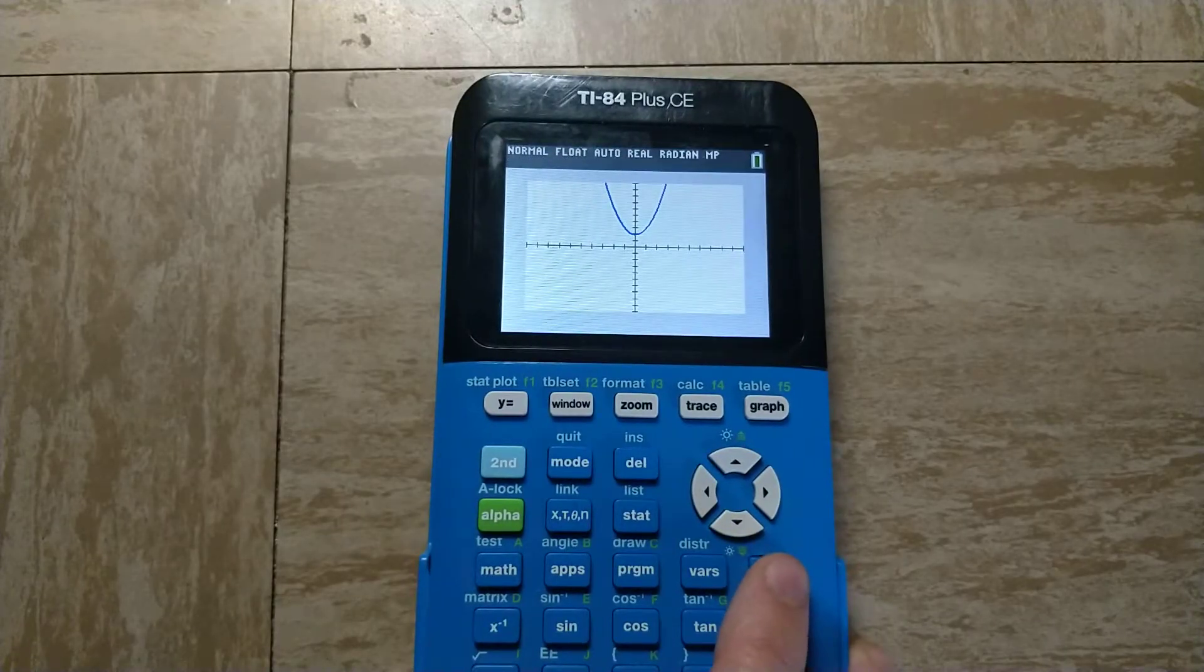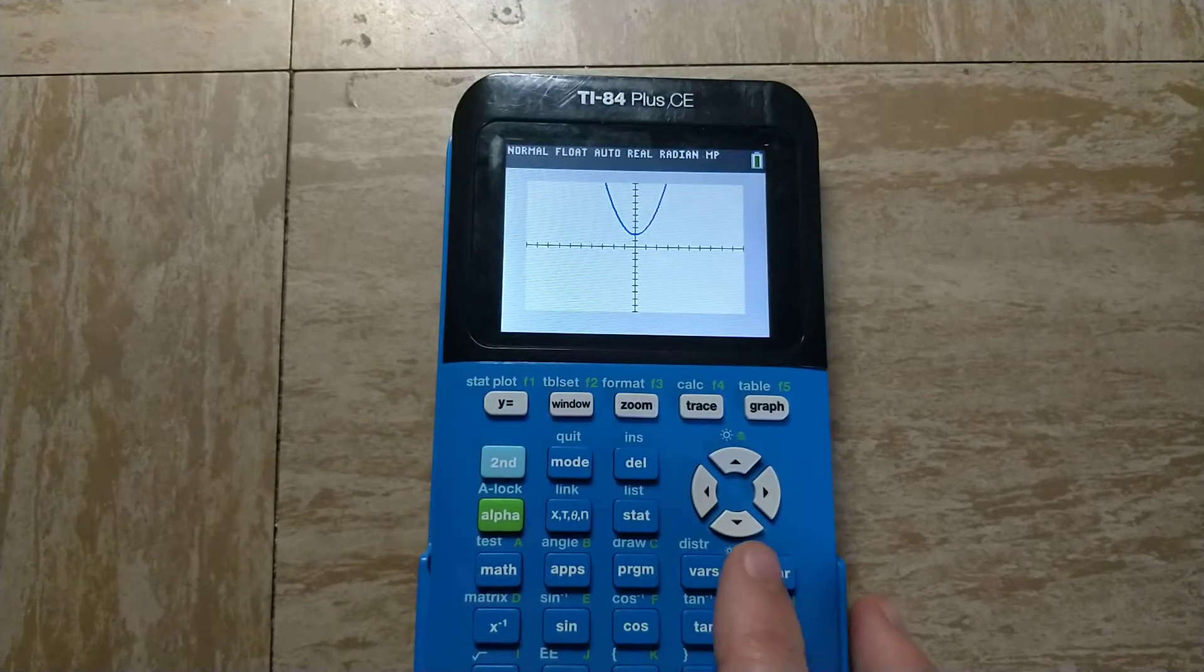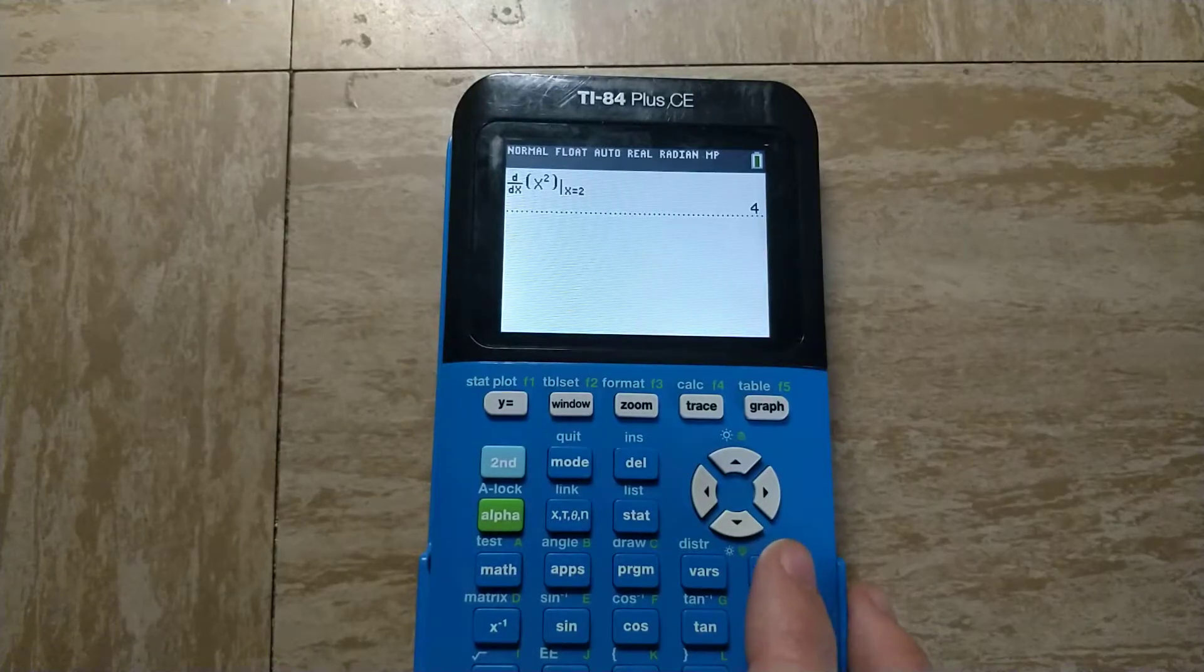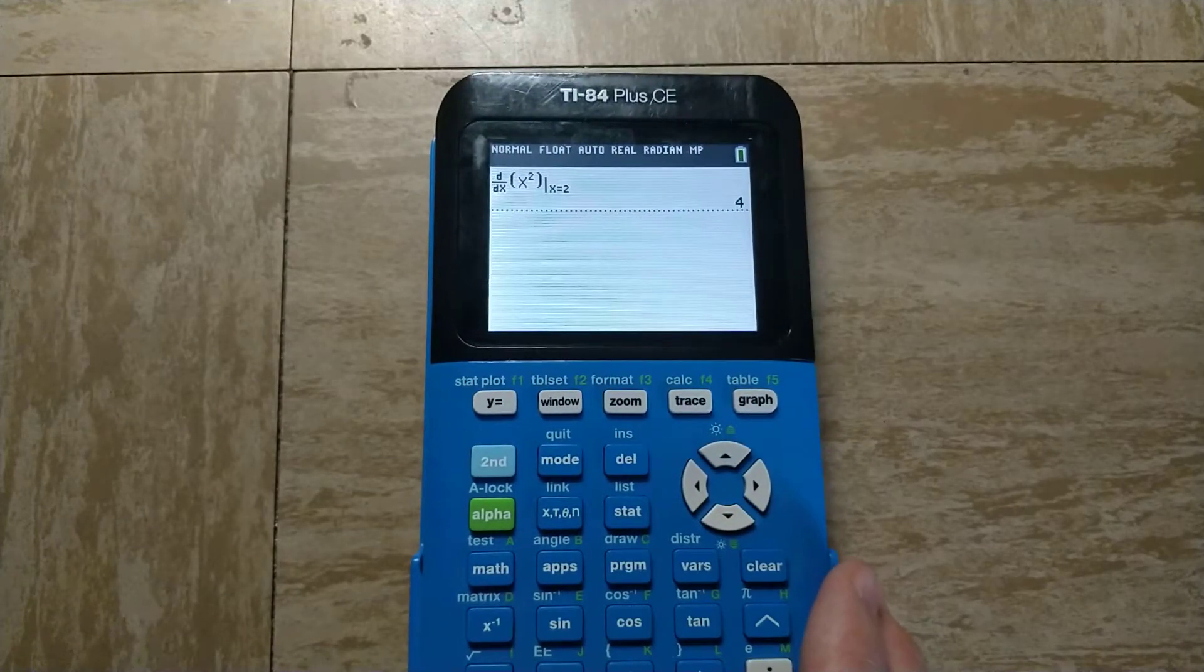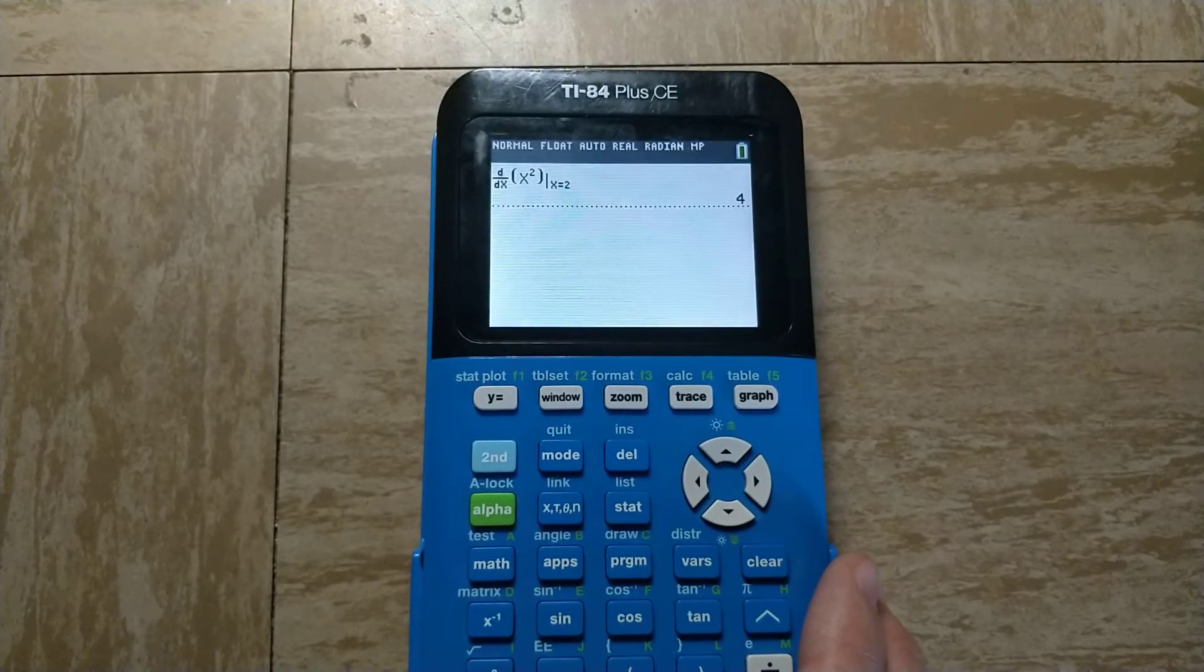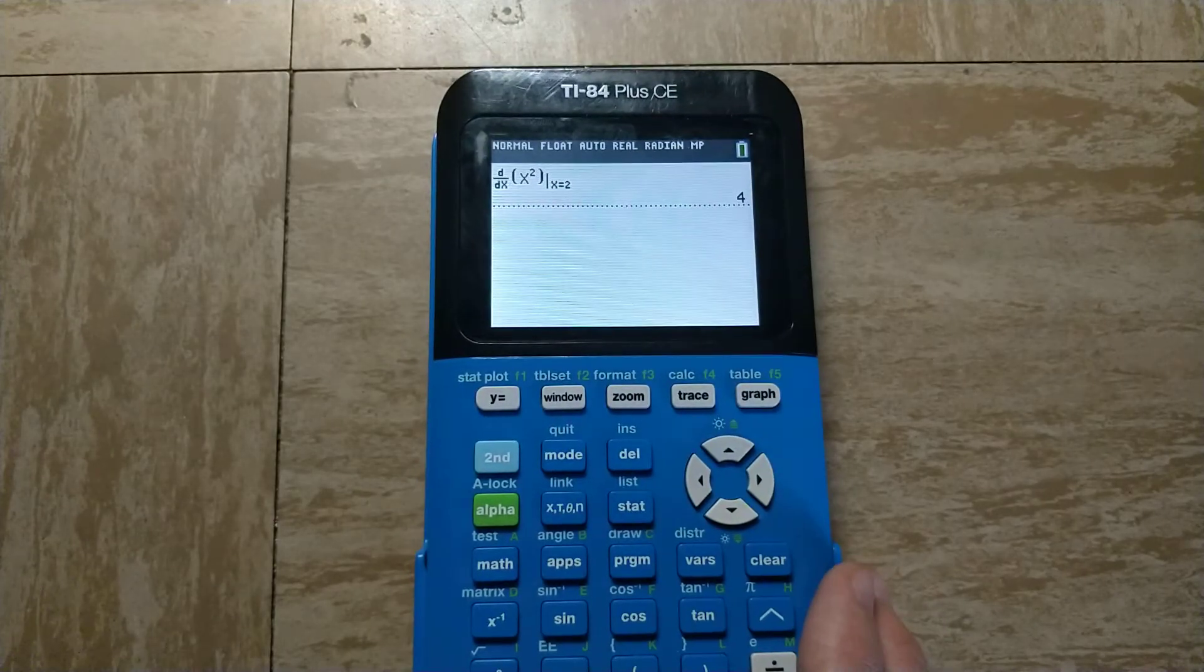There isn't really a way to find the symbolic derivative on the TI-84 Plus CE graphing calculator. There is a program for it that I'll leave in the description below, but it doesn't really simplify things that well. But it's there if you want to try it out.